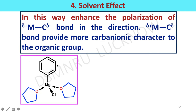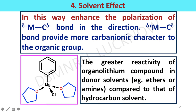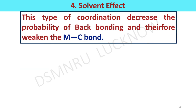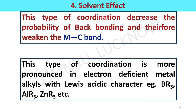For example, the Grignard reagent is stable because two tetrahydrofuran molecules are coordinated to the magnesium metal atom, completing its tetrahedral structure and making a stable complex. The Grignard reagent would not be stable in a non-polar, non-coordinating solvent like hexane. The greater reactivity of organolithium compounds in donor solvents like ether and amine compared to hydrocarbon solvents is also due to this effect. This type of coordination weakens the metal-carbon bond and makes the organometallic compound more reactive.